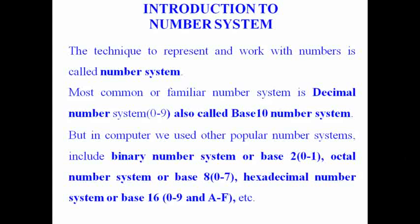The next number system is the octal number system. In the octal number system, there are a total of 8 symbols or digits available. That's why it's called a base-8 number system. The next number system is the hexadecimal number system, or base-16 number system. In the hexadecimal number system, we use a total of 16 symbols — that is, 0 to 9 digits and A to F characters.